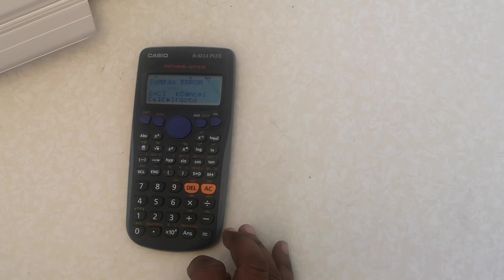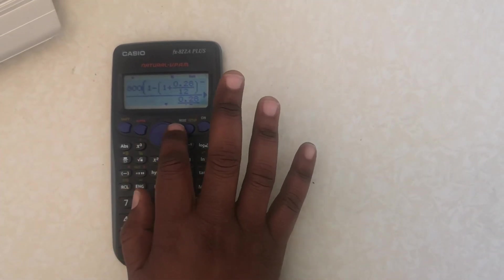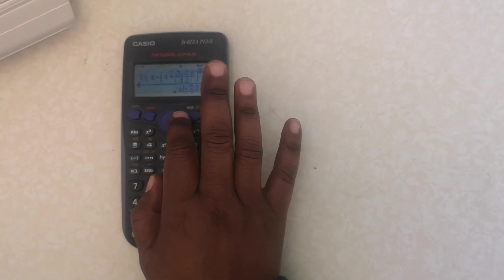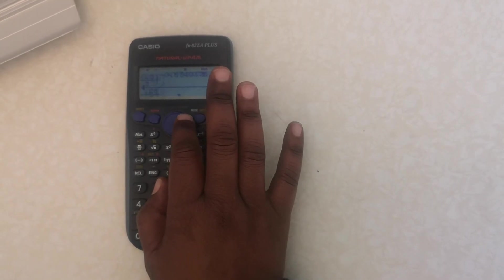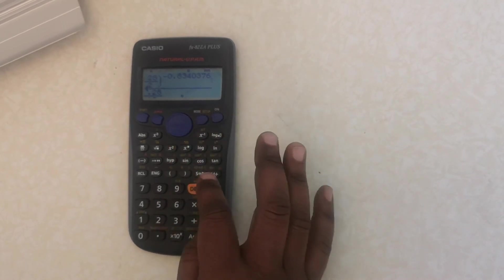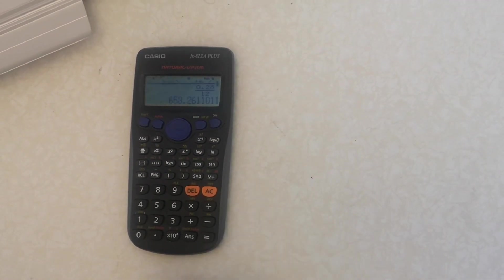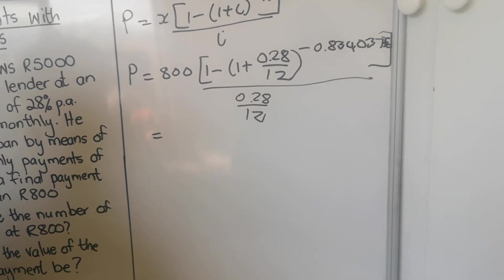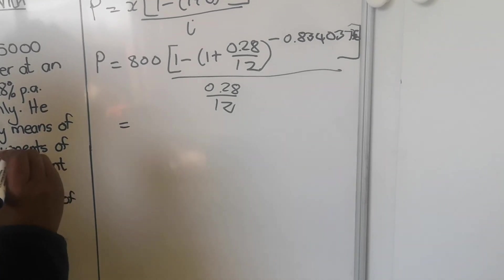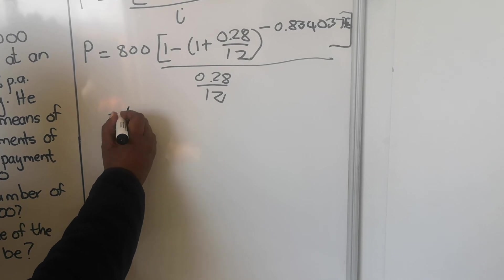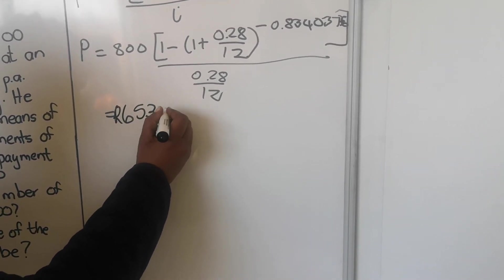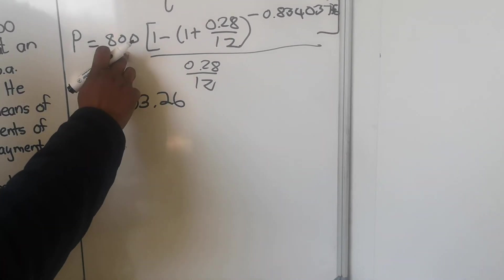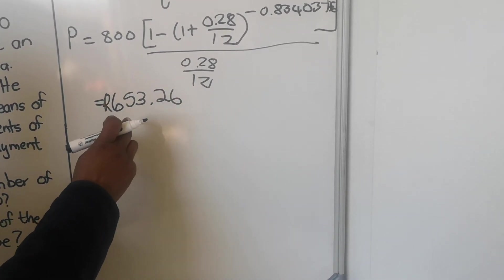See that error that I was talking about? There's a bracket I didn't close. Then go back - this is the first bracket, the second bracket. See here, I didn't close this bracket. That's why I have that error. I didn't panic. When I close the bracket, then got the answer. So it means the last payment will be - no, will not be - R653.26.